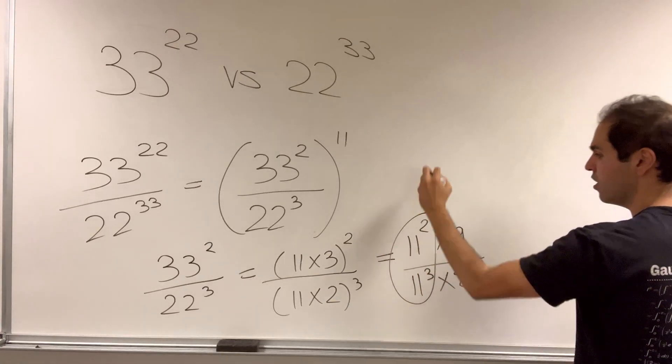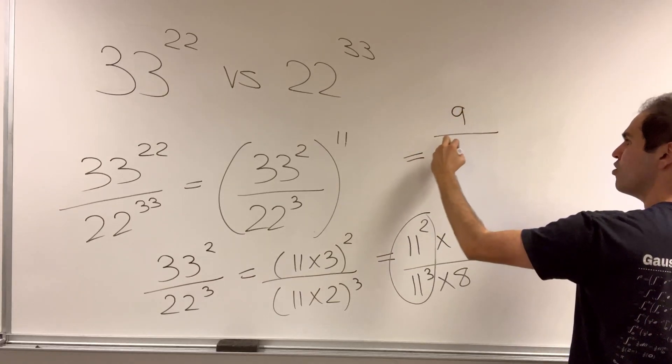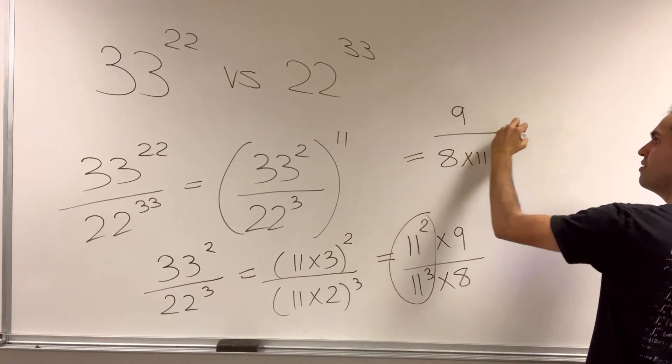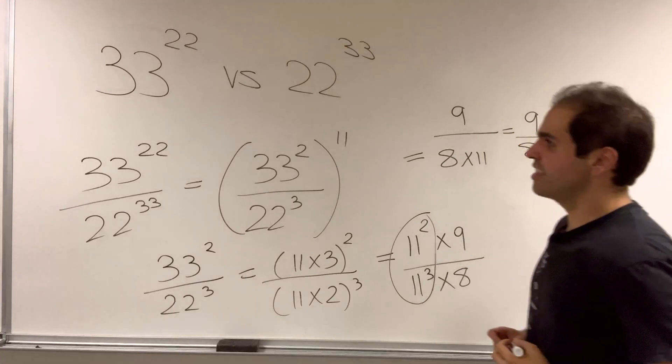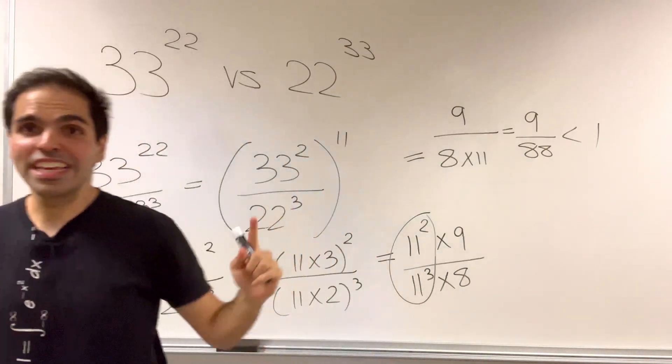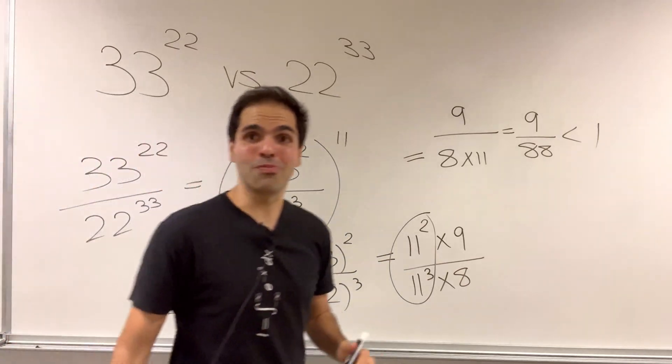Well, this becomes 9 over 8 times 11, which is 9 over 88, which is less than 1. So here again, the exponent reigns supreme.